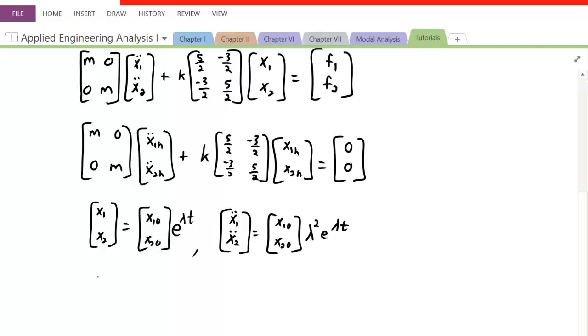So we bring down the constants, M 0, 0 M, because these are just constants. They have no actual value in respect to the derivative. We have, for the first part of the X double prime, X1 0 and X2 0, lambda squared. So we're going to replace the X double prime with X1 0, X2 0, lambda squared, e to the lambda t.